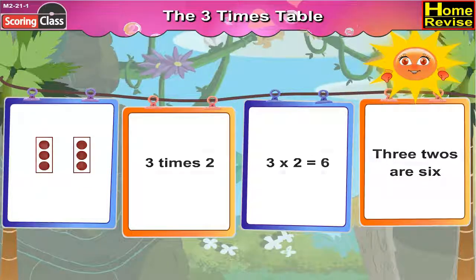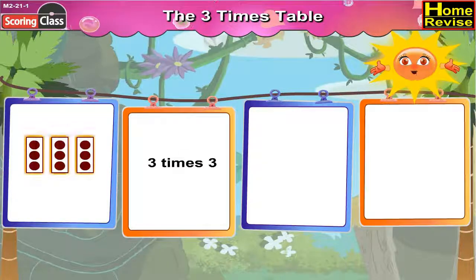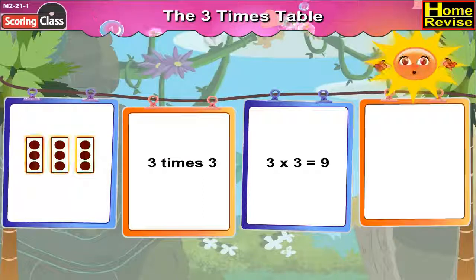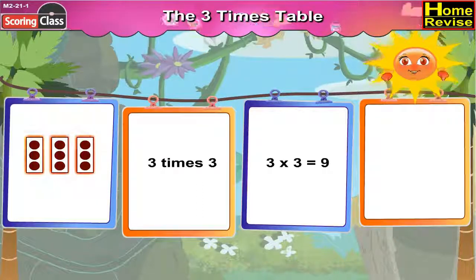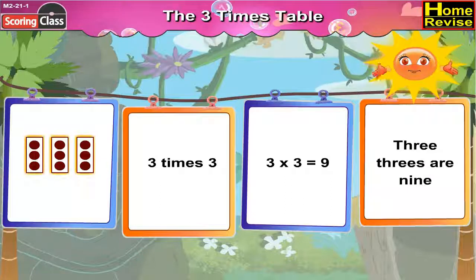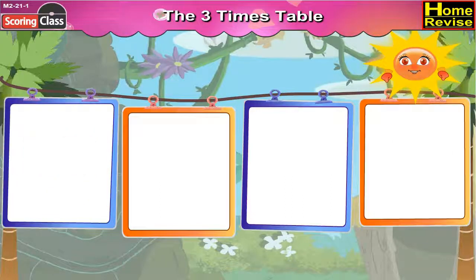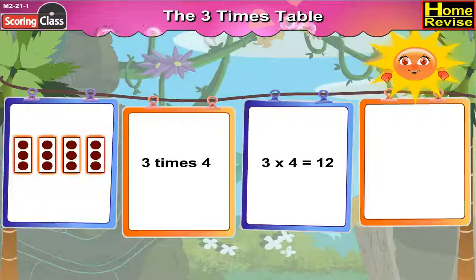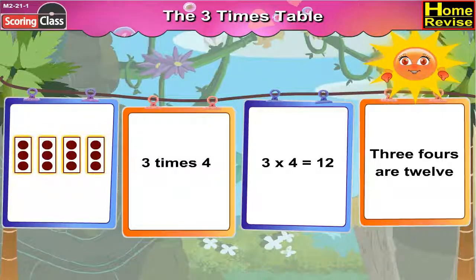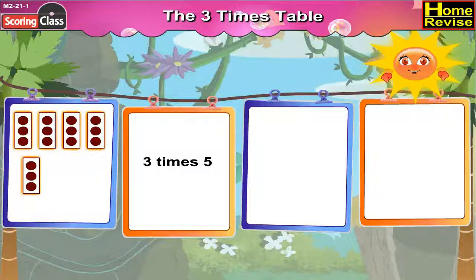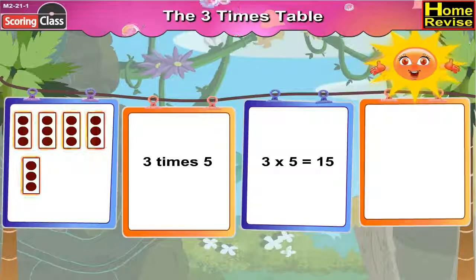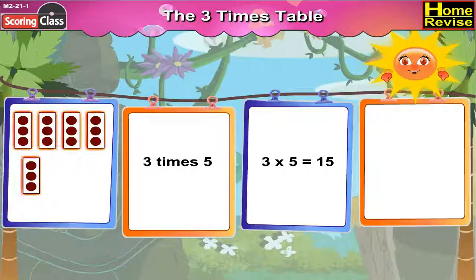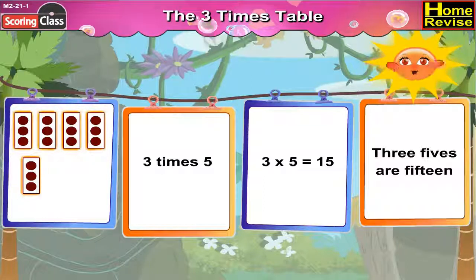Three times three, that is three multiplied by three, is equal to nine. We say it as three threes are nine. Three times four, that is three multiplied by four, is equal to twelve. Three fours are twelve. Three times five, that is three multiplied by five, is equal to fifteen. We say it as three fives are fifteen.